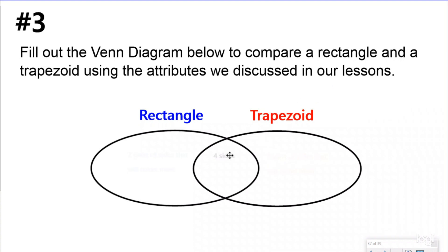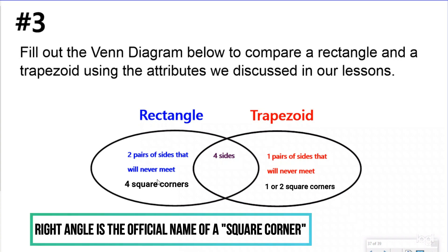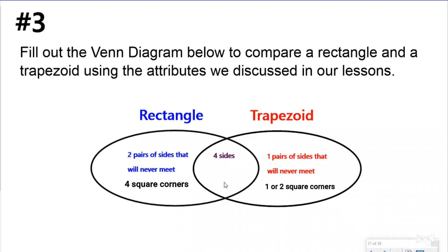So hopefully the first thing you wrote that they had in common is that they both have four sides—they're both quadrilaterals. Really, that's about it, because a rectangle has two pairs of sides that will never meet and a trapezoid has one pair of sides that will never meet. A rectangle also has four square corners and a trapezoid doesn't have four square corners. They are, however, both quadrilaterals because they both have four sides.